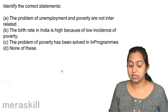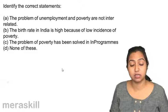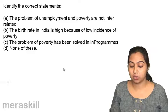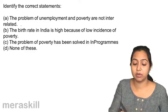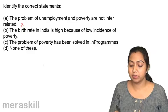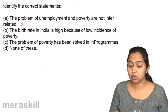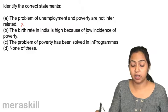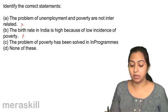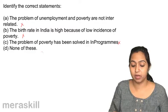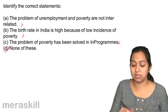Identify the correct statements. The problem of unemployment and poverty are not interrelated — is that true? No, it is not true. The problem of unemployment and poverty are related; poverty can be removed only by providing employment to the people. The birth rate in India is high because of low incidence of poverty — No, poverty incidence is very high. The problem of poverty has been solved — No. None of these statements are correct.